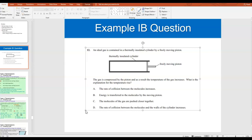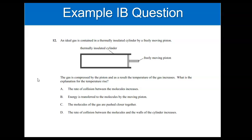Today we're going to be doing just a few more examples with ideal gas and the ideal gas law, and then we're going to be finishing up the notes by talking about the average kinetic energy of an ideal gas particle. Let's start with some IB examples.